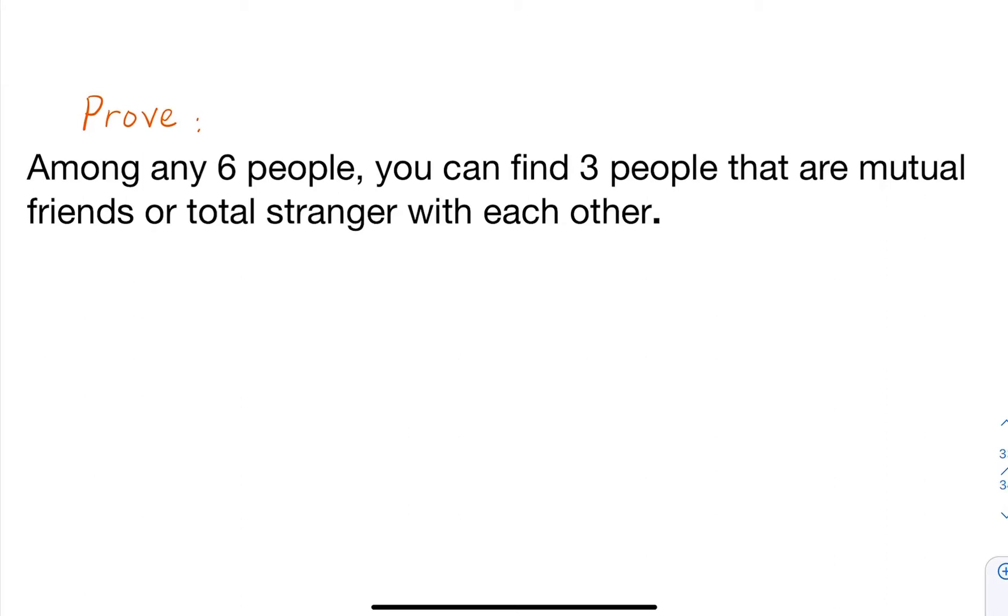Today we'll prove this simple fact: if you choose any six people in the world, you can always find three of them that are mutual friends (they know each other) or totally strangers with each other. So how do we prove that?